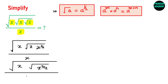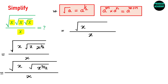So the numerator has x raised to the power 3 by 2 divided by x. Once again, root x can be written as x raised to the power 1 by 2. The denominator remains x, and the numerator becomes x raised to the power 3 by 2, and then raised to the power 1 by 2. There is another rule: a raised to the power m raised to the power n can be written as a raised to the power m times n.